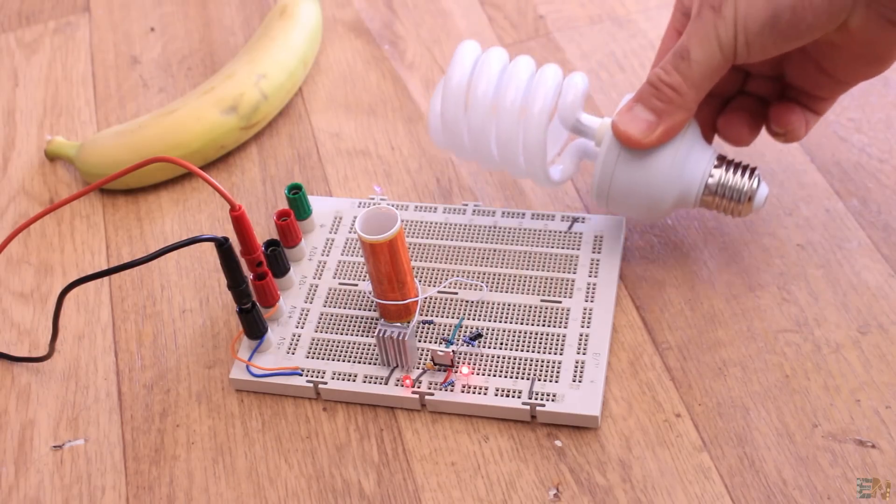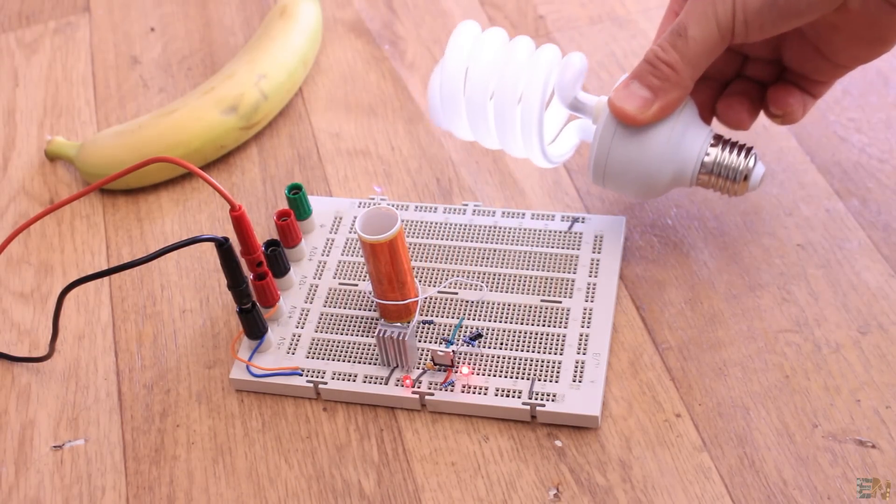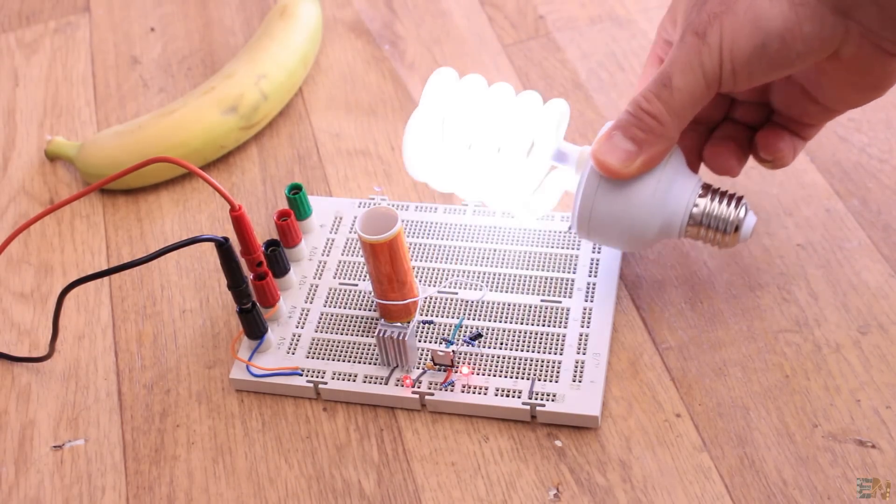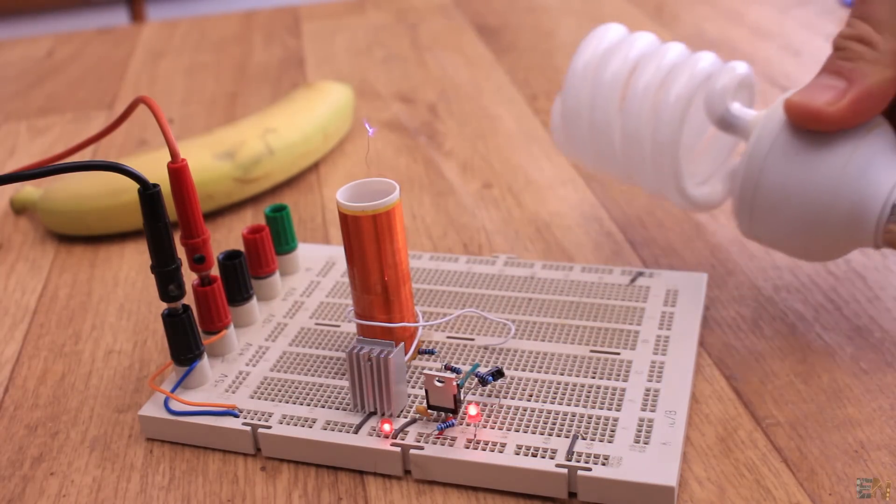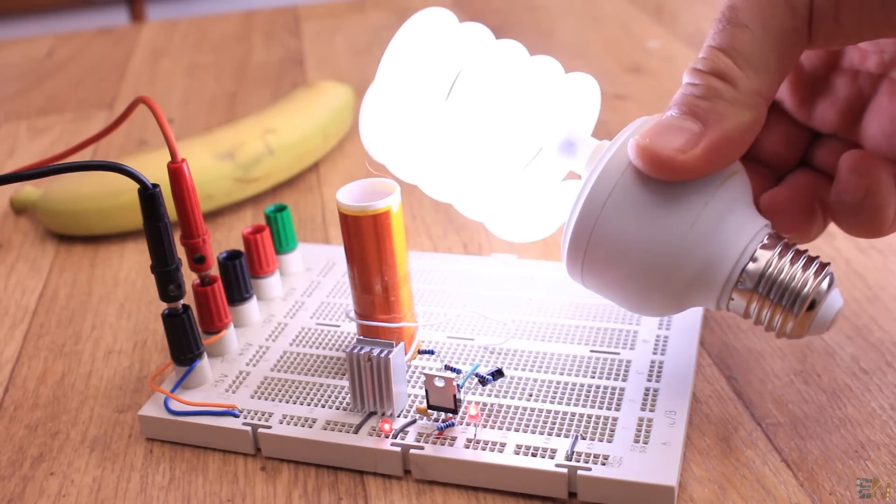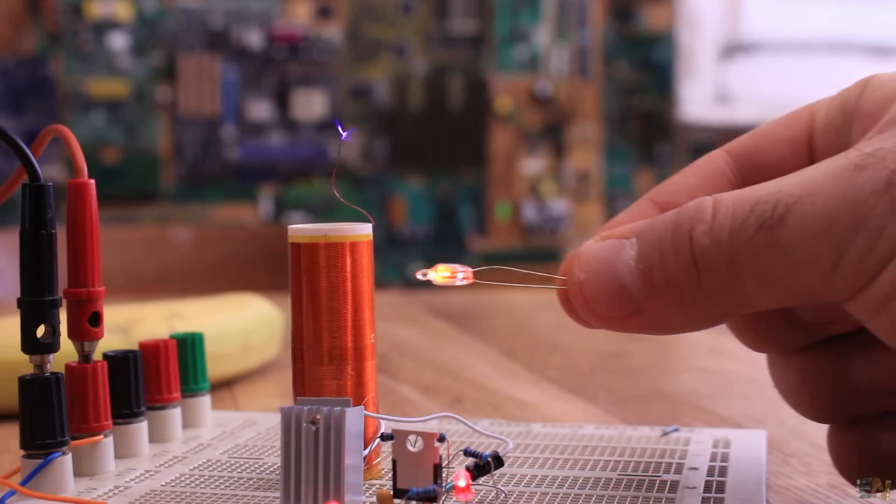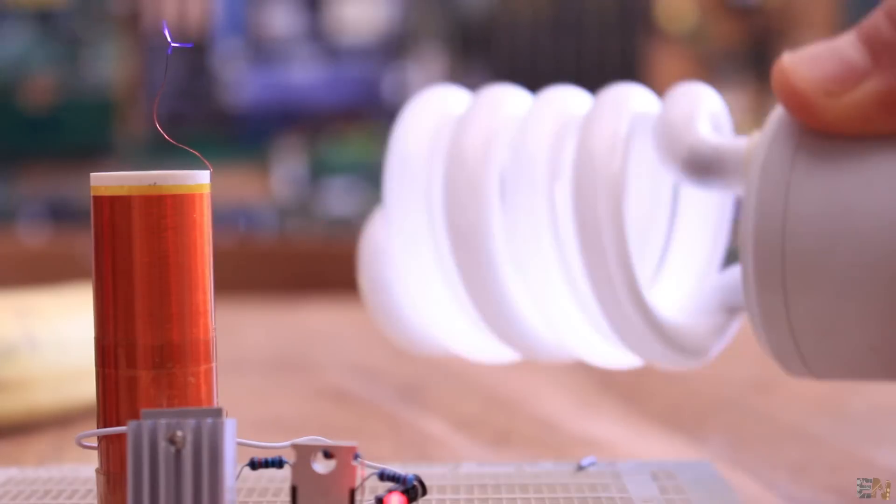Or a compact fluorescent lamp like this one. As you can see, even if we don't have wires connected to the light bulb, it will still light up, because this circuit could generate very high voltage, in order of thousands of volts, and that could excite the fluorescent material inside of the light bulb.